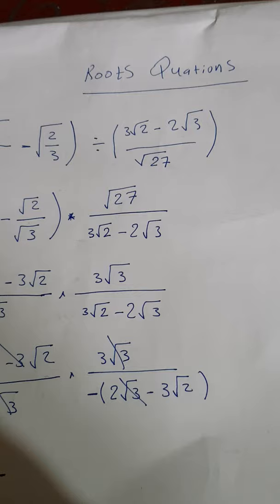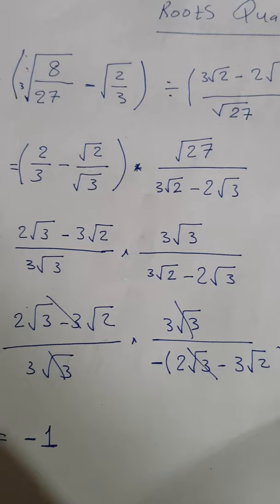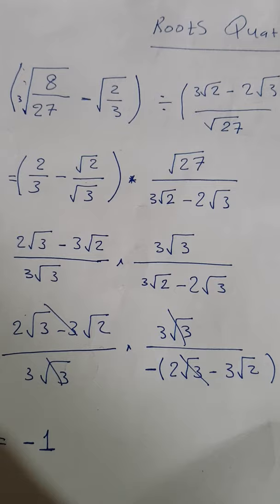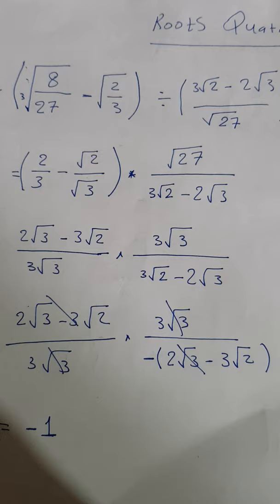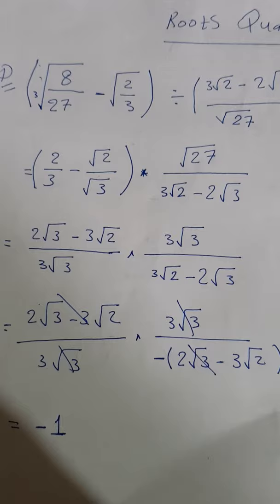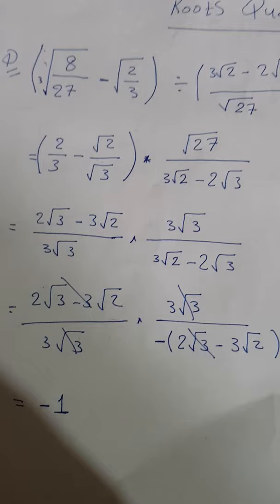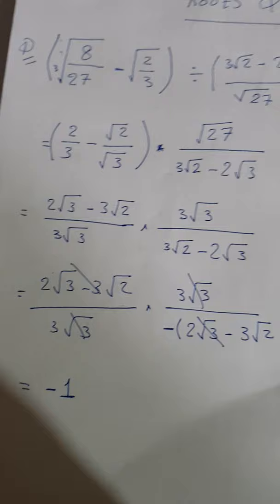Finally, we do something. Eight under the cubic root is equal to two, and twenty-seven under the cubic root is equal to three. Minus two under the square root over three — and the square root part is not simplified further because it is the base.